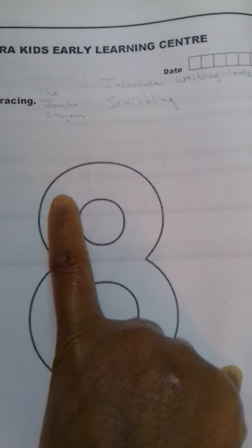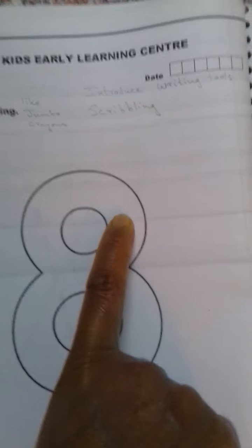After number seven you can give the child more of scribbling activities with crayons so that in future he may use pencil, so it will be easy for the child. Just give the crayons and ask the child to scribble.